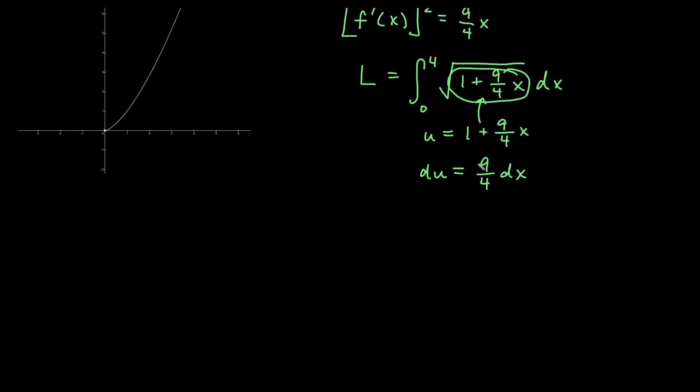In other words, this part here is going to be u. And then dx, if you're not sure how to sub for dx, we could go ahead and solve for dx. I could multiply by the reciprocal on both sides and get that 4 over 9 du is equal to dx. So this part here would actually be 4 ninths du.